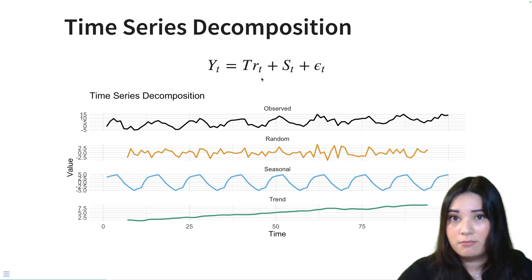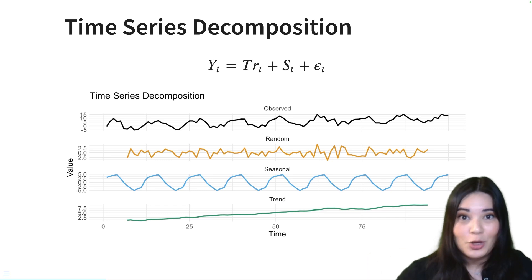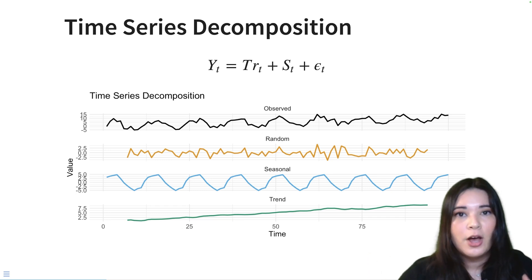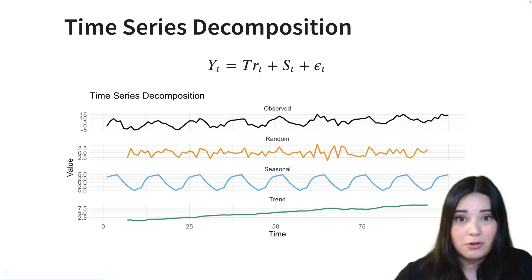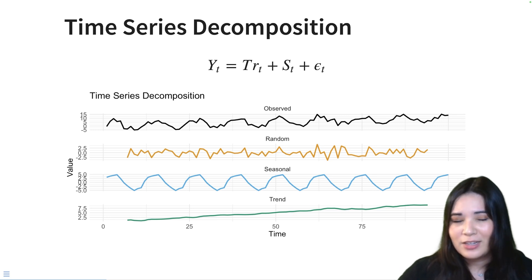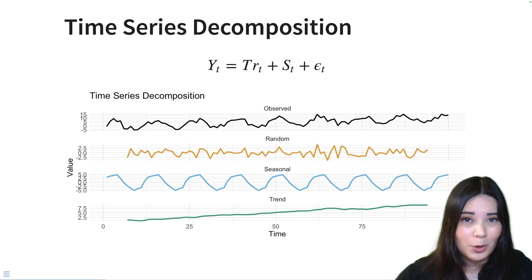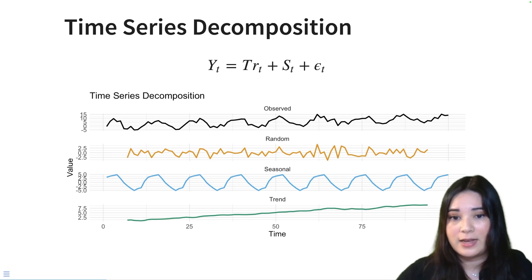If we added all these together, we would get our observed data. This can help us understand our data because we can understand trends over time, as well as if there's any seasonality we might want to account for. For instance, if you work in marketing and you're trying to forecast your sales, you might want to take into account the trend — is your business trending up, down, or staying flat? And then you also want to think about seasonality. If you are a business that sells swimsuits, you're probably going to do a lot more business in the summer and maybe the spring, and that seasonality can help you plan financially.